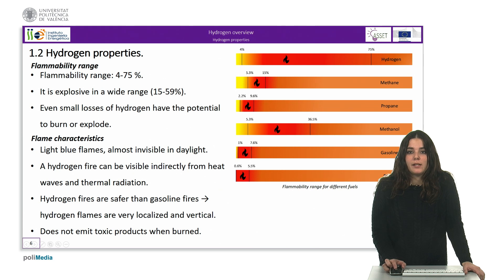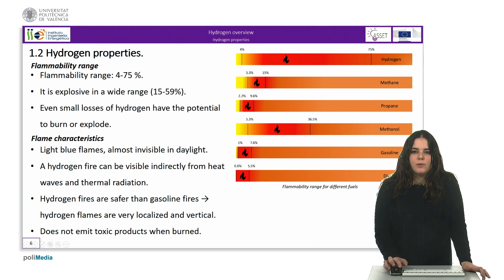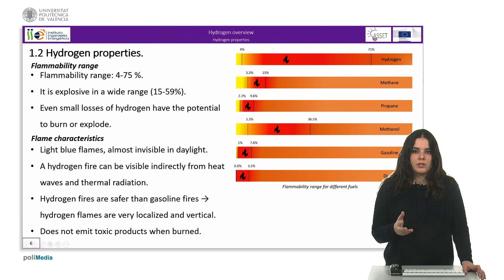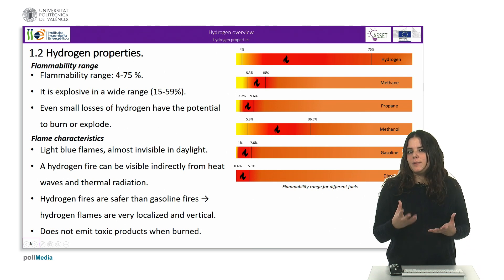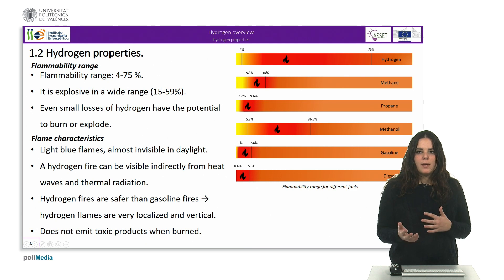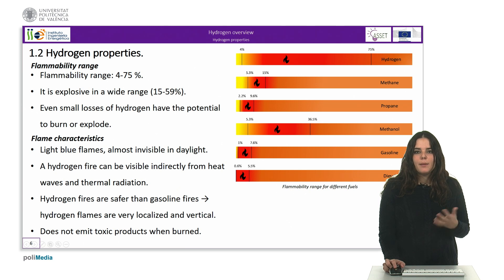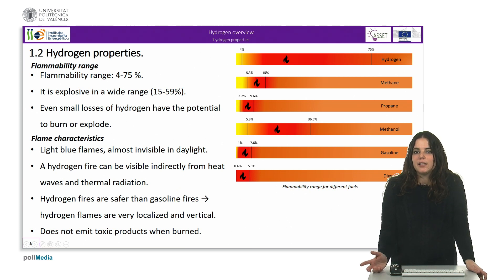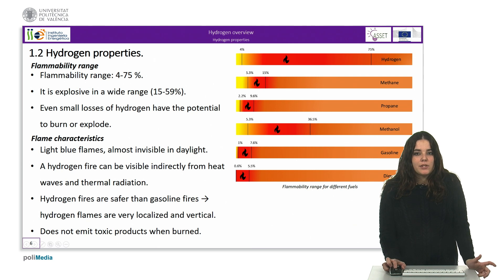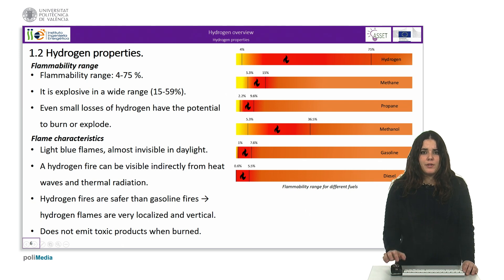Hydrogen flames have particular characteristics because they are blue and almost invisible in daylight. Unlike other fuels, hydrogen does not emit toxic products when burned. However, hydrogen fires can be visible indirectly from heat waves and thermal radiation, and in many cases the flames burn surrounding materials that produce smoke and soot, which are easier to identify. In many aspects, hydrogen fires are safer than gasoline ones because hydrogen rises quickly due to its high flammability and diffusivity. As a result, hydrogen flames are very localized and vertical, and even though hydrogen burns more energetically than gasoline, it does so for a shorter time.